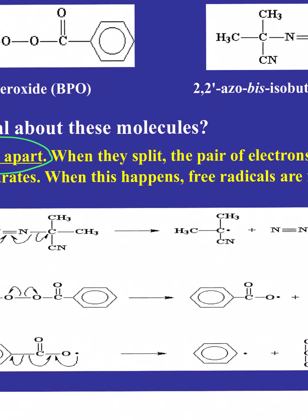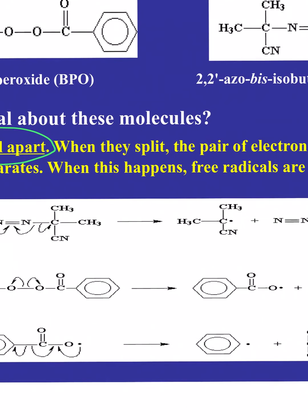In terms of what AIBN does: it breaks up, and in doing so transfers electrons to the pair of nitrogen atoms and gives you the triple bond — nitrogen gas. At the same time, as that's being generated, you're generating free radicals — these are ready and raring to go find something and start the process of polymerization. Benzoyl peroxide is similar, but under polymerization conditions you don't get oxygen gas; instead it breaks up and generates free radicals right there between those oxygen atoms.